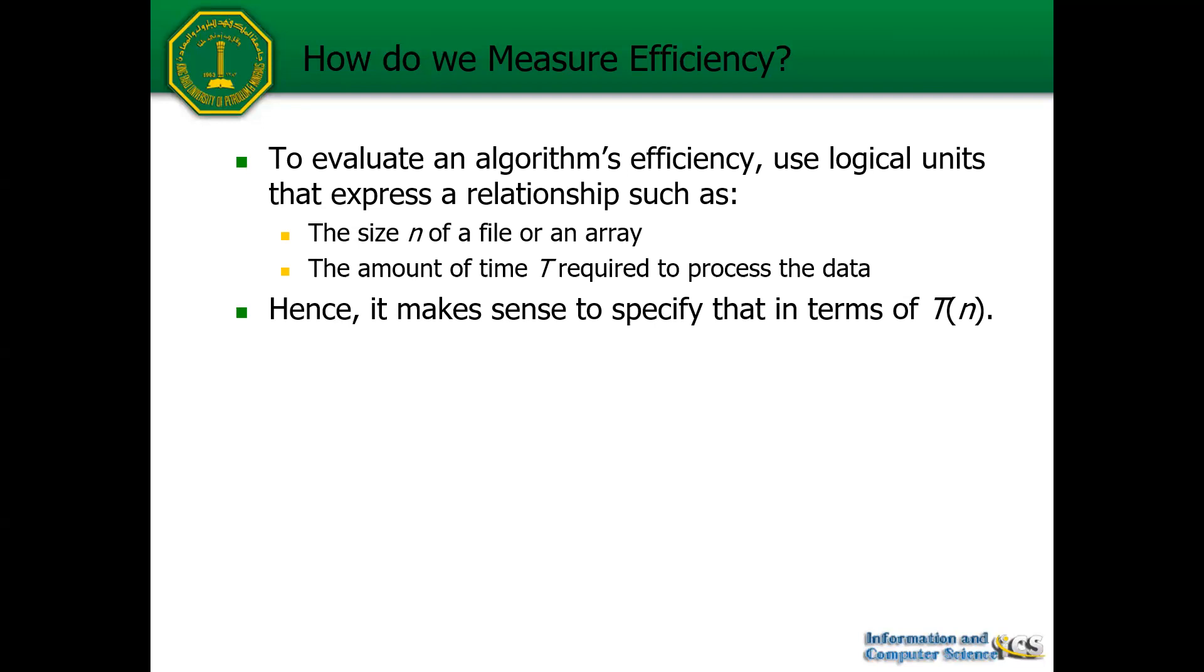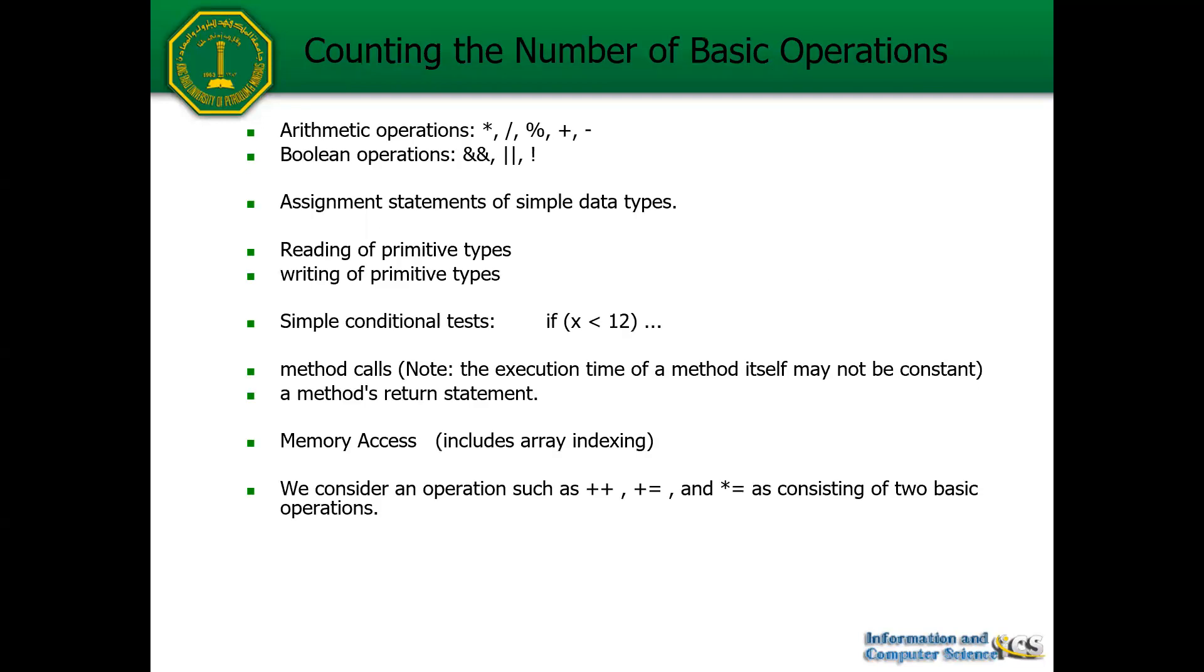I mentioned earlier counting basic operations. What are the basic operations? We have arithmetic operations—multiplication, division, modulo, addition, and subtraction. We have the boolean operations that you will find usually in a condition. We have assignment statements, reading and writing primitive types, conditional tests like an if statement or loop. We also have method calls—we just mean here the method call, not the entire method execution, because the time taken by the method to execute must be calculated independently.